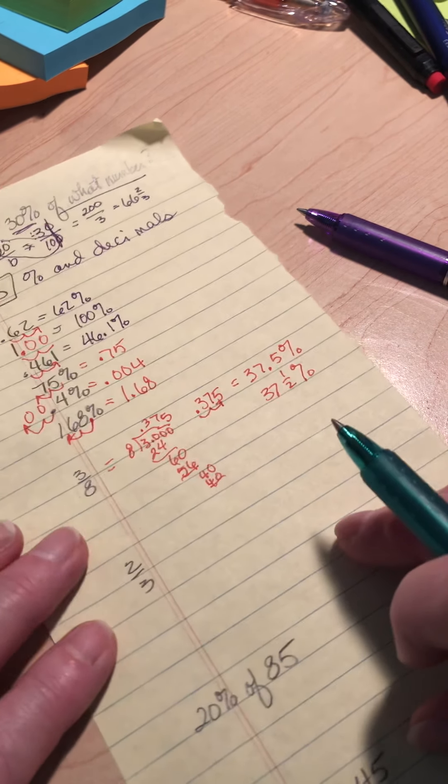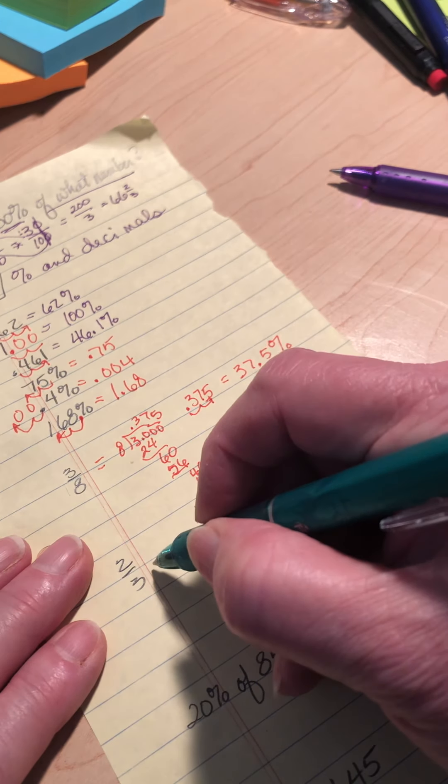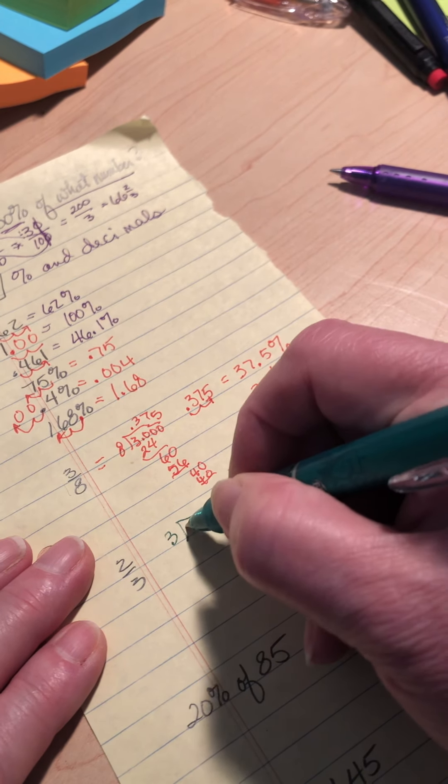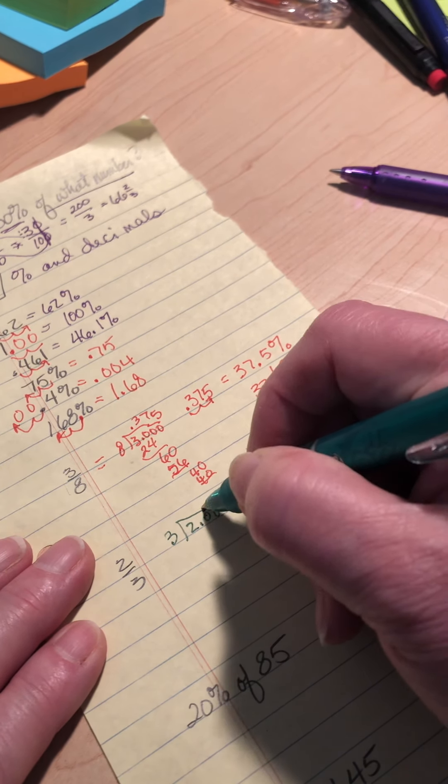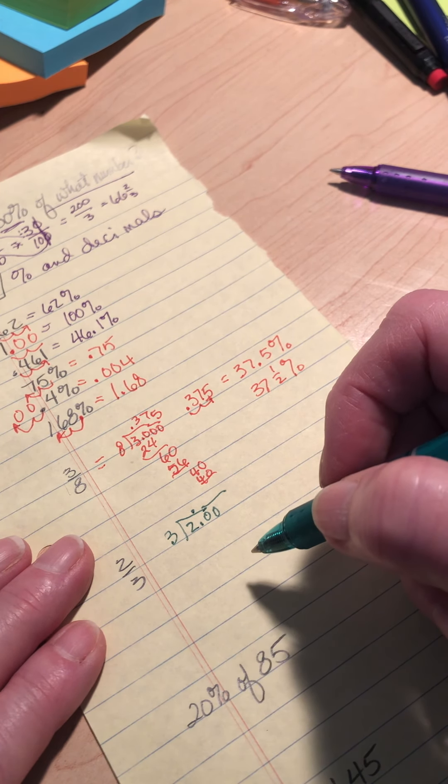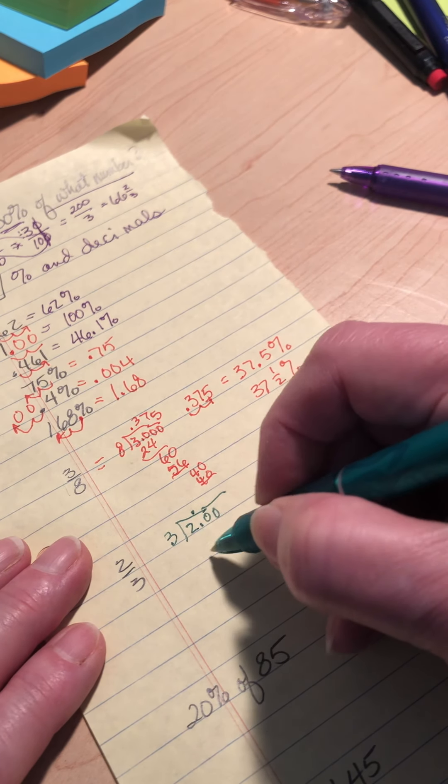So what if they give you one like 2 thirds? Well, 2 thirds is 3 goes into 2. And I know because it's a 3, it's going to be a repetend. Hopefully you know that too. You might even know what this is. 3 goes into 20, 6 times 18. Subtract. That's just what I started with. I'm going to get a whole bunch of 6s.